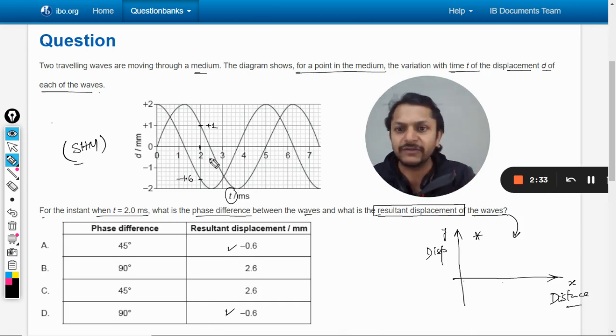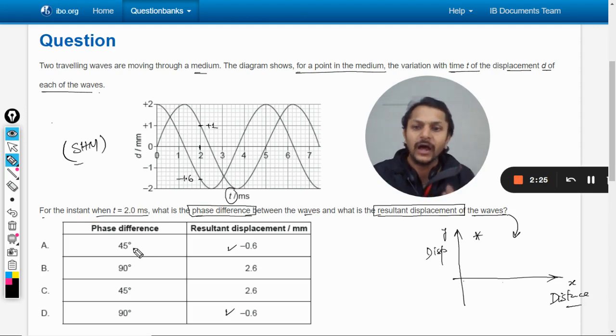Obviously the resultant displacement is coming out to be minus 0.6, and the units will be millimeter as given. Now the second thing is, what is the phase difference between the two waves? We have to see that. As such, there is a particular formula that I'm going to give you.